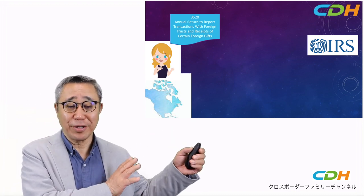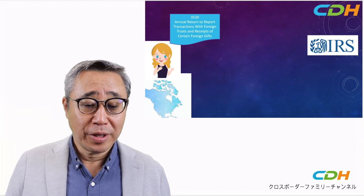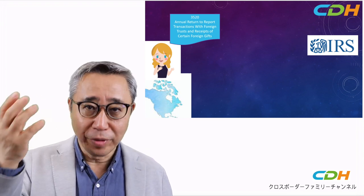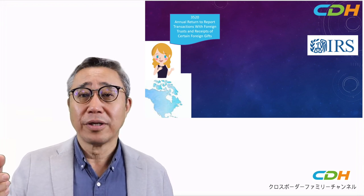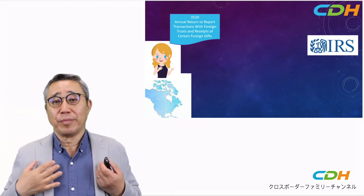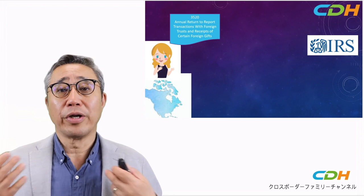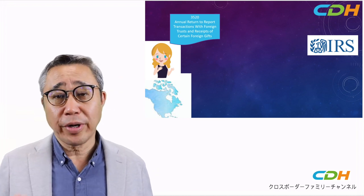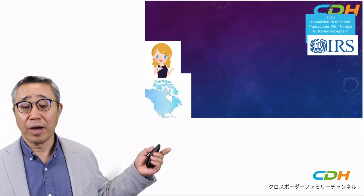On the left-hand side, the Form 3520's official name is 'Annual Return to Report.' This is a reporting form, not a paying form — a reporting form. It is used to report transactions with foreign trusts and receipts of certain foreign gifts. So 'receipts' meaning this form is about you — the person who received the gift — and the receipts of certain foreign gifts must be reported to the IRS via Form 3520.